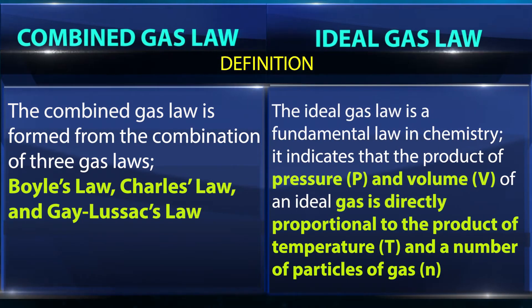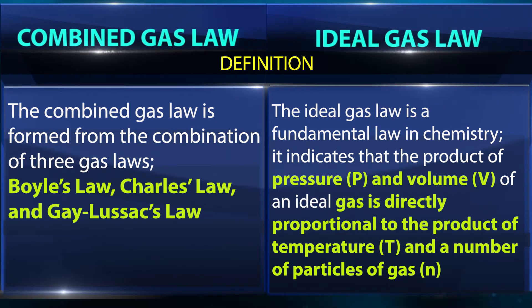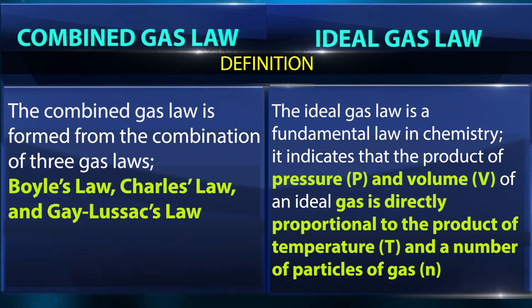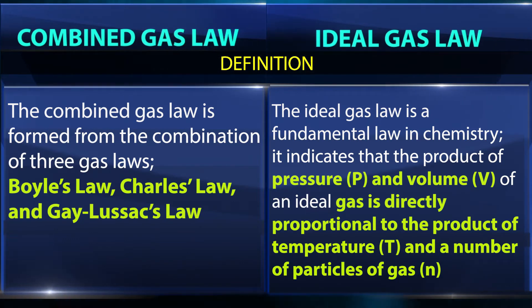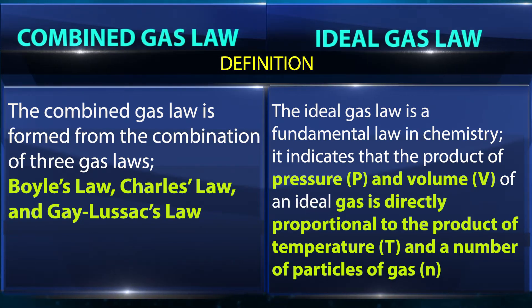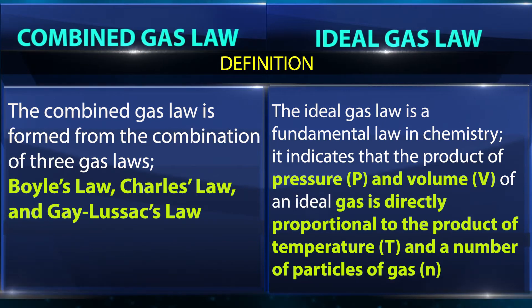Definition — Ideal Gas Law: The ideal gas law is a fundamental law in chemistry. It indicates that the product of pressure (P) and volume (V) of an ideal gas is directly proportional to the product of temperature (T) and the number of particles of gas (n).